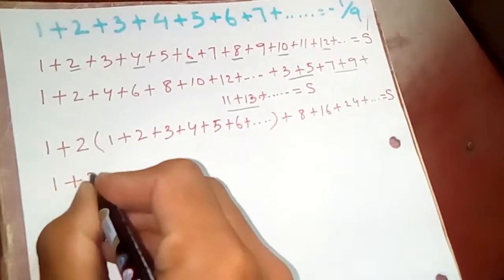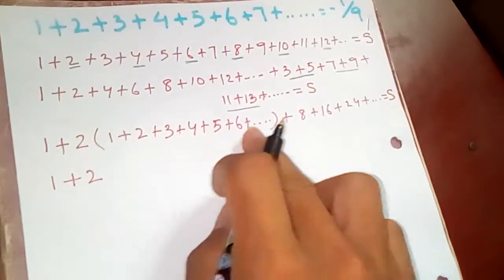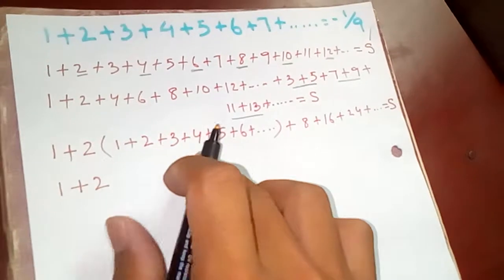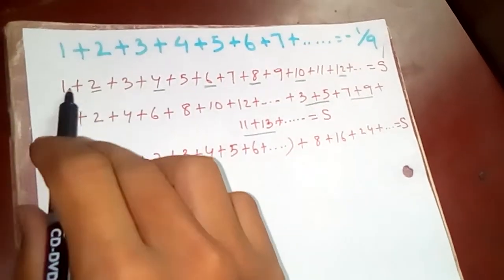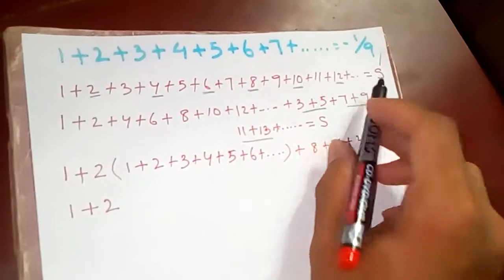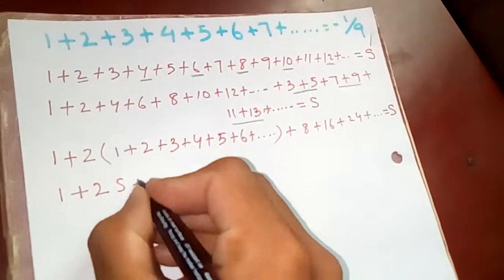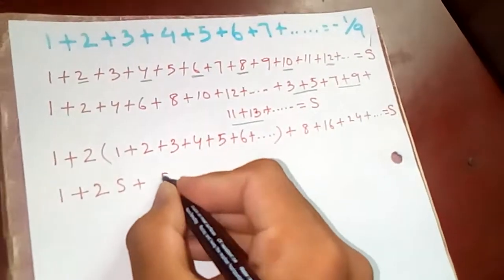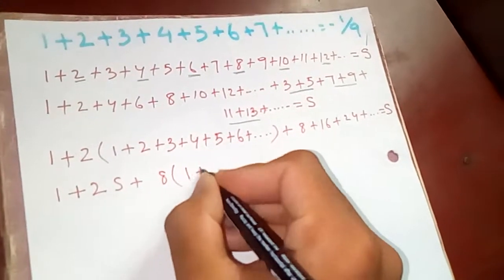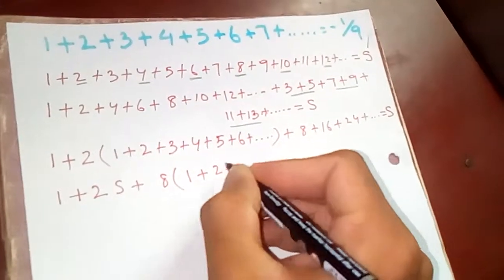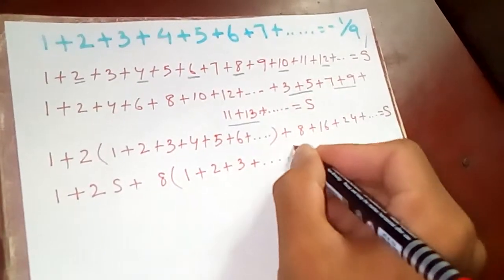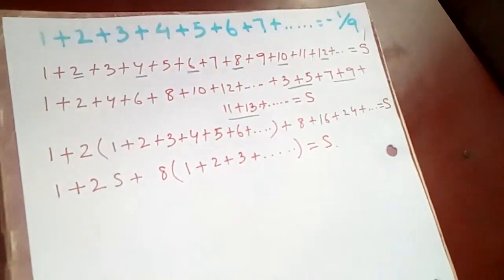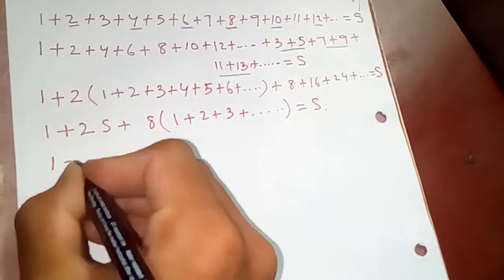And one plus two, one is this. This is nothing but one plus this race. This is our beginning one. This one is just S. Plus here, if I take out eight common, what? Eight, sixteen, twenty-four, and it will go on, which is 8S. And now, one plus...